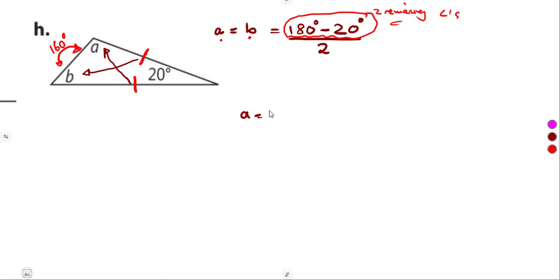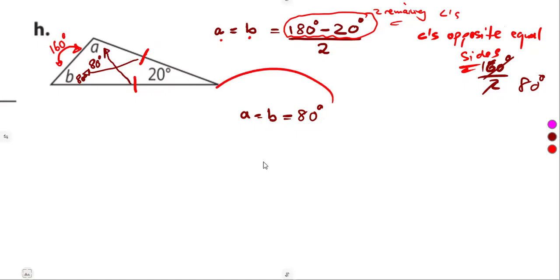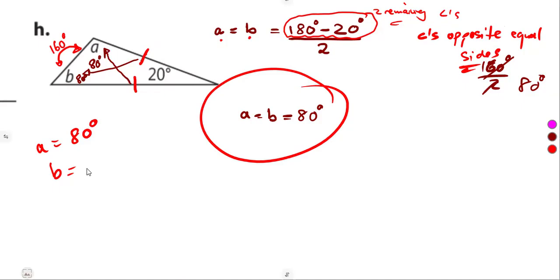The calculation is: 180 minus 20 equals 160, and 160 divided by 2 equals 80 degrees. So angle A equals angle B equals 80 degrees — angles opposite equal sides of an isosceles triangle. These are the typical questions you might be given; just work out as many questions as you can while revising for your exams.